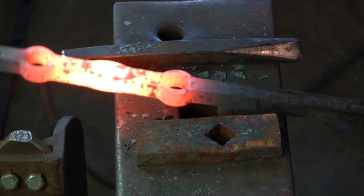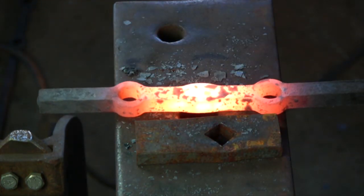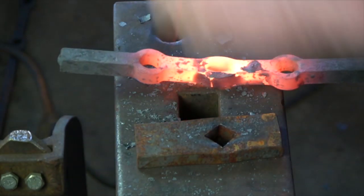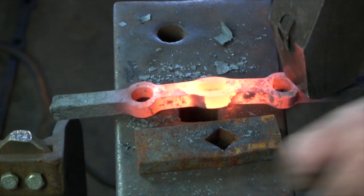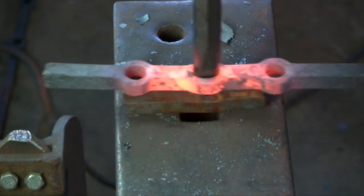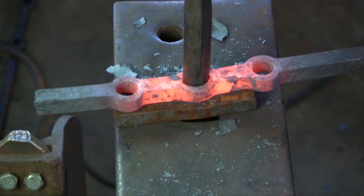So in drifting, I'm going to get a square drift, with the end, the working end of the drift, reflecting the size and shape of the slot punched hole that I just made, and I've got a bolster plate, so that I'm not driving this hole, or the material surrounding the hole, down the hardy hole as I work.